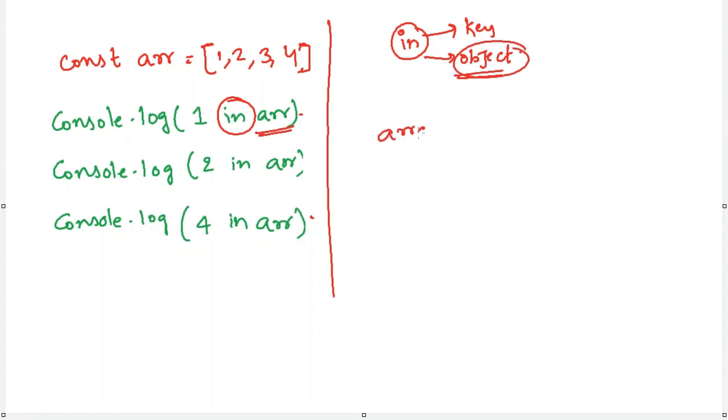Because arrays are considered as objects in JavaScript. So how you will access the value in an object by using its key? How you will access the value in an array by using its index?